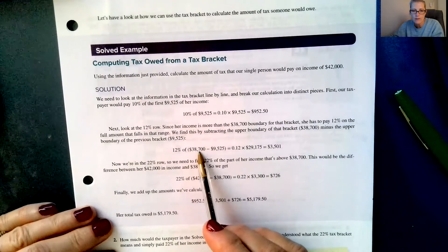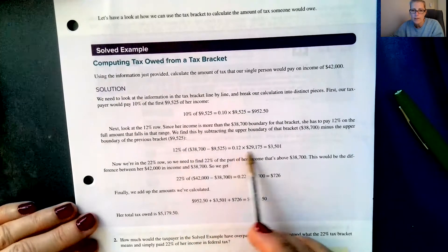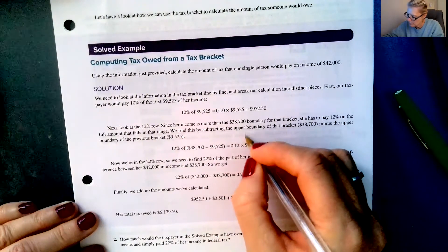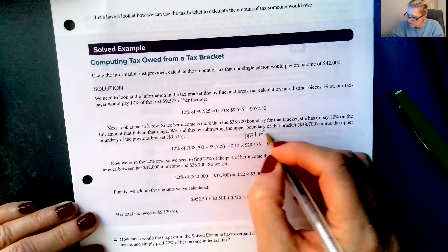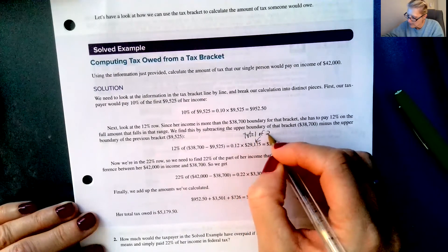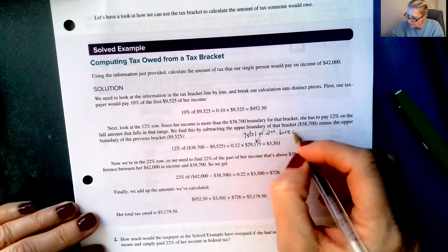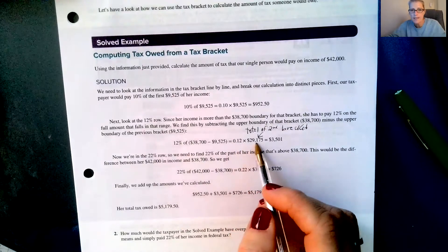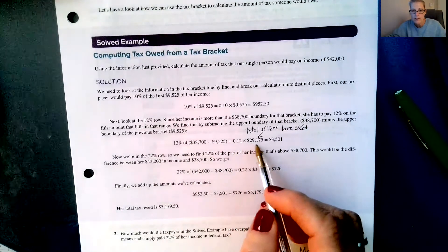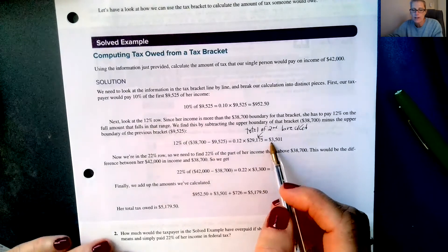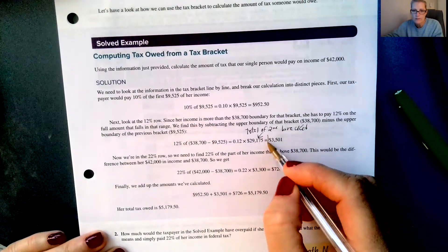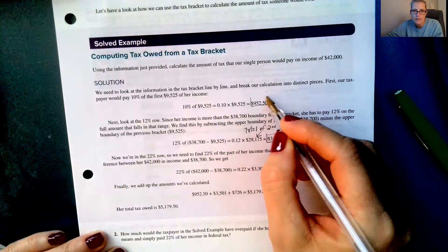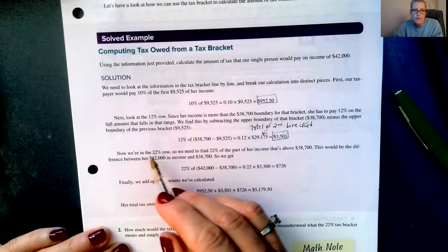We find this by subtracting the upper boundary of that bracket minus the upper boundary of the previous bracket. So $38,700 minus $9,525, that means there's $29,175 that falls into the second bracket. So she pays 12% of that entire second bracket because her income falls just above it. So that means she pays an additional $3,501. And this is the tax from the first bracket.